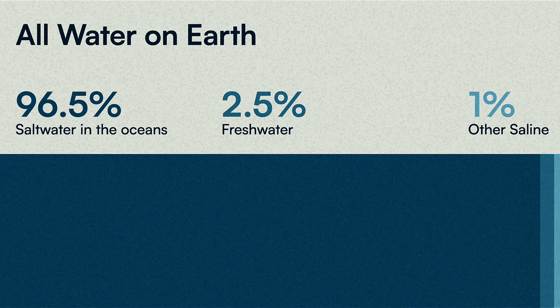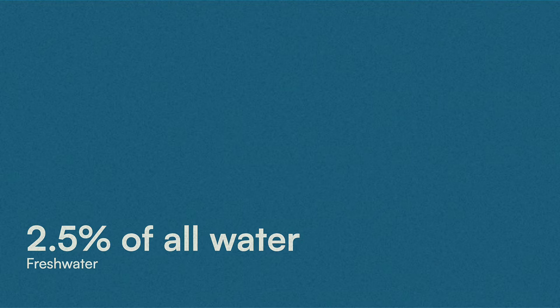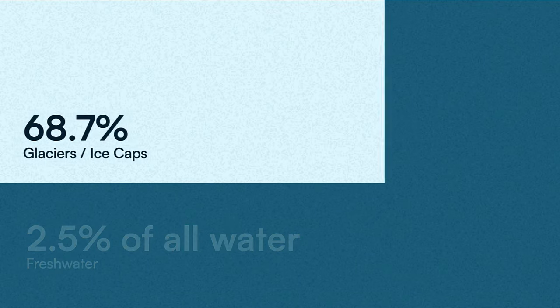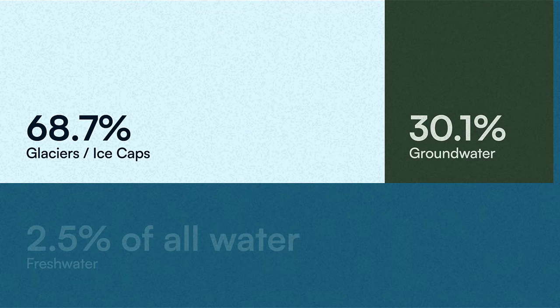Let's focus in on that 2.5% that exists as freshwater. This is a mere 2.5% of all the water on Earth. Breaking that down, nearly 70% is locked as solid ice in Earth's glaciers and polar ice caps. Another 30% exists trapped in the ground, accessible only through the drilling of wells.